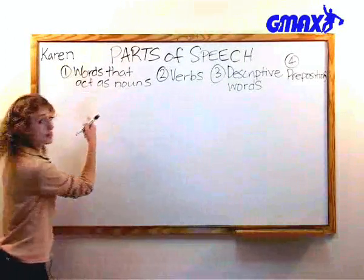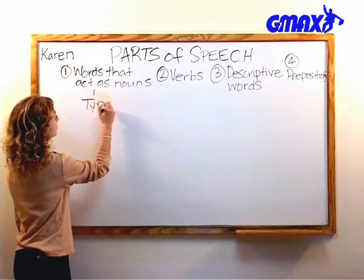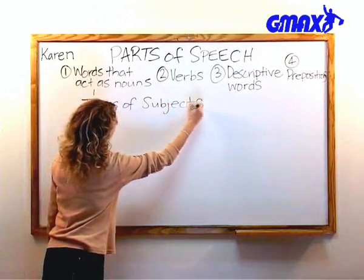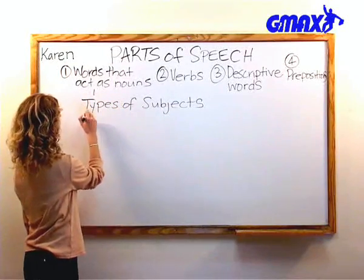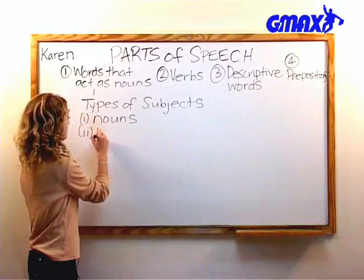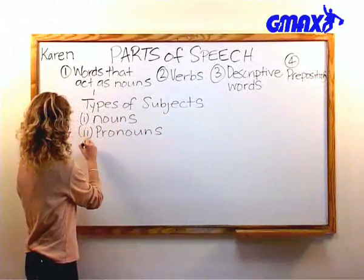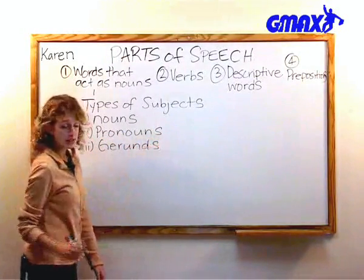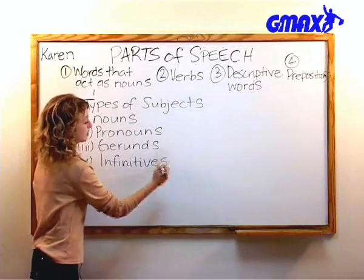We're going to start off with types of subjects, which fall under the category of words that act as nouns. There are four parts of speech that can act as subjects, including nouns, pronouns, and infinitives.